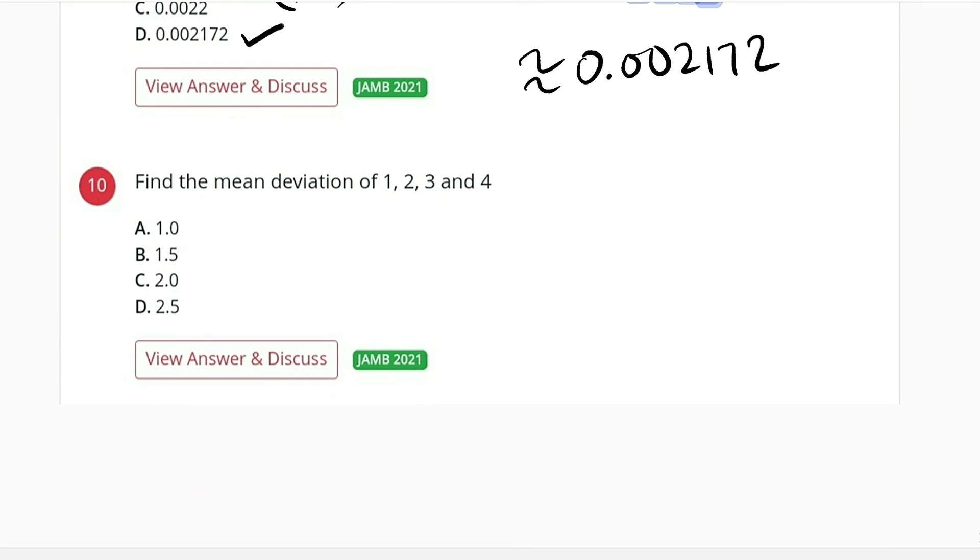Number 10, we are asked to find the mean deviation of 1, 2, 3, and 4. First of all, you have to find the mean, and the mean is sum of all the items divided by the number of items.